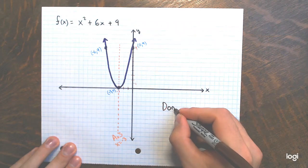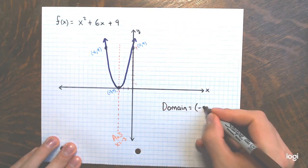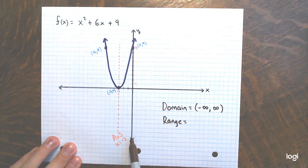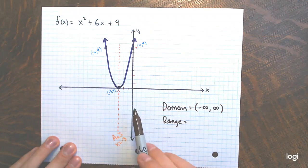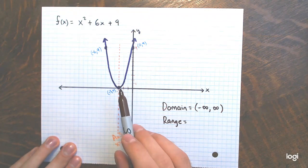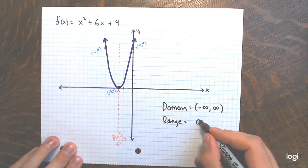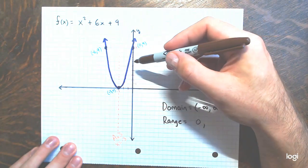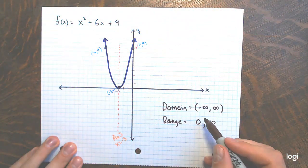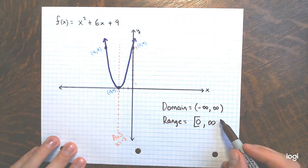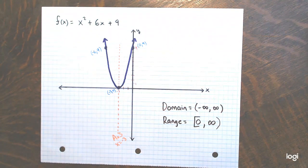Domain is all real numbers. Range: since the parabola opens upward with vertex at y equals 0, the lowest y-value is 0 and there's no upper bound. Range is the interval from 0 to positive infinity, with a bracket on 0 because it is actually a y-coordinate of the vertex.